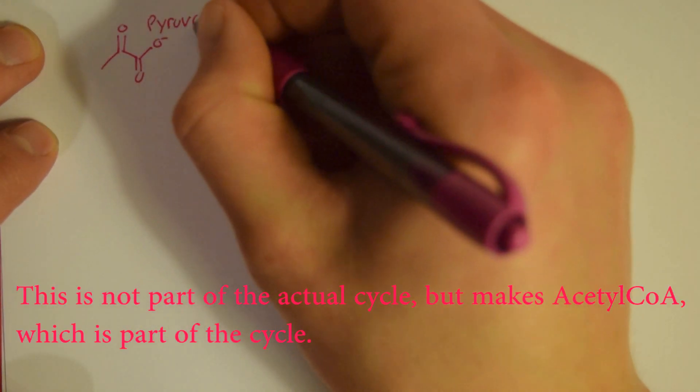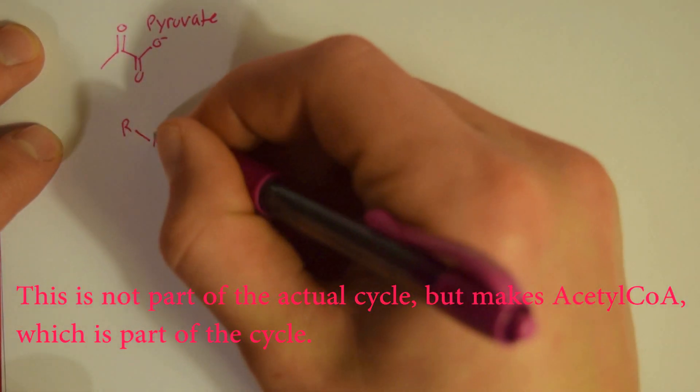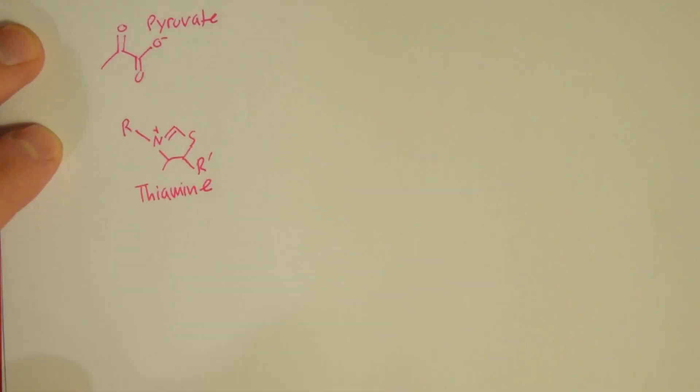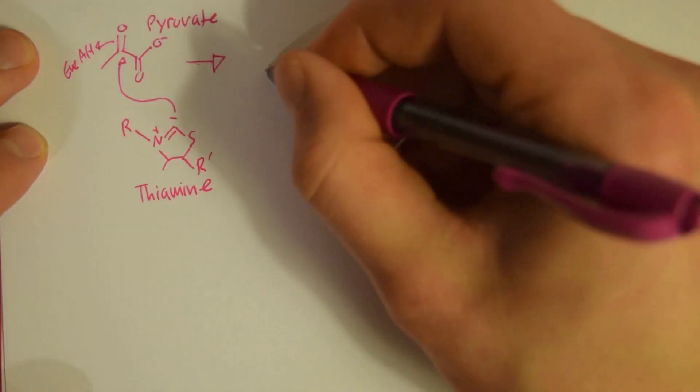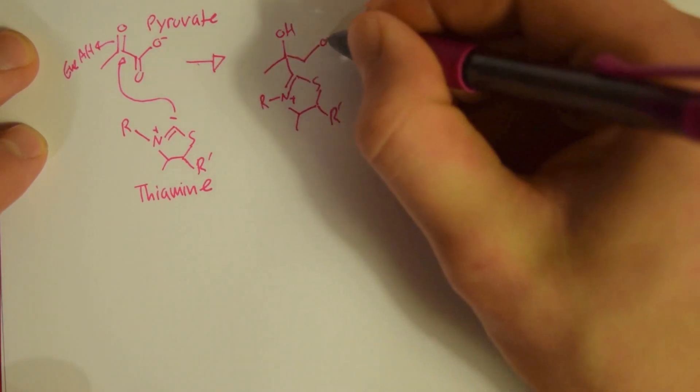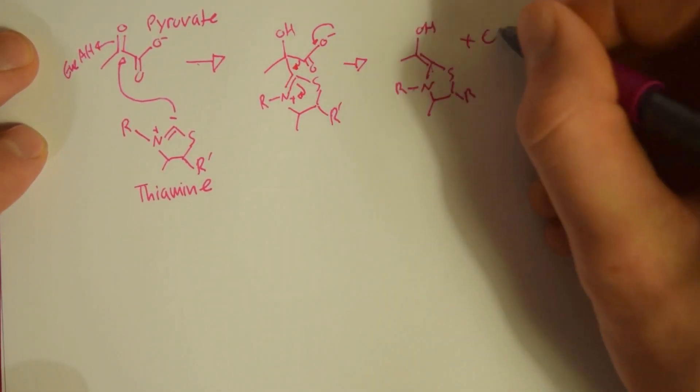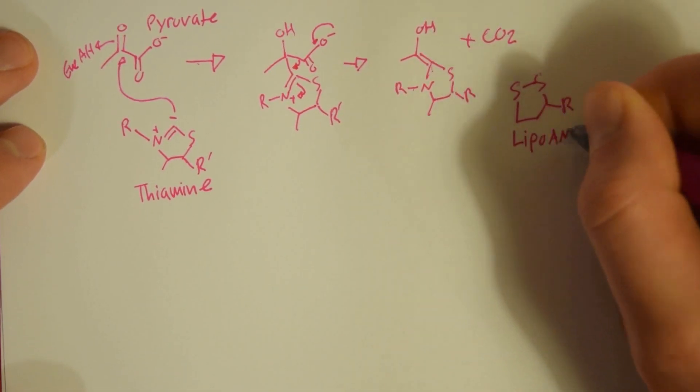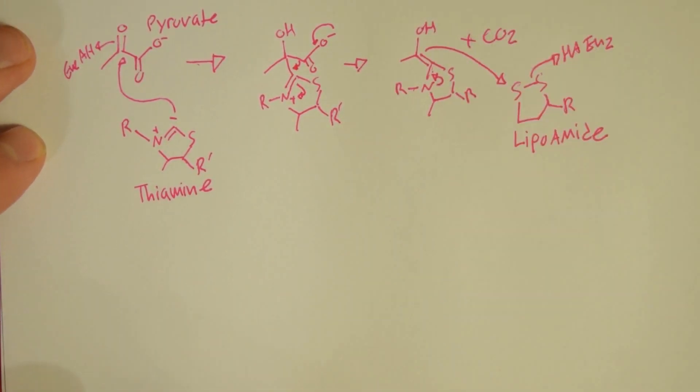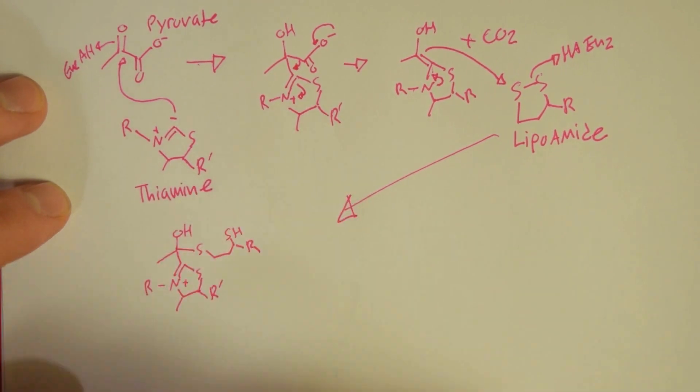So the first part of this reaction is going from pyruvate to acetyl CoA. So the first part is when thiamine attacks the pyruvate, then carbon dioxide gets kicked off, and then the molecule attacks a lipoamide, forms a tetrahedral intermediate, the thiamine gets kicked back off.